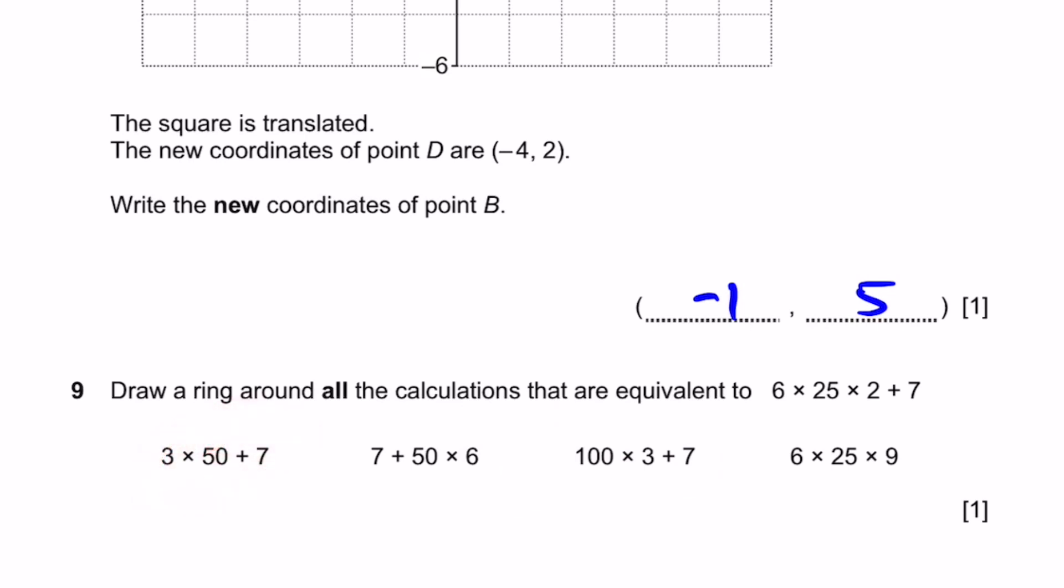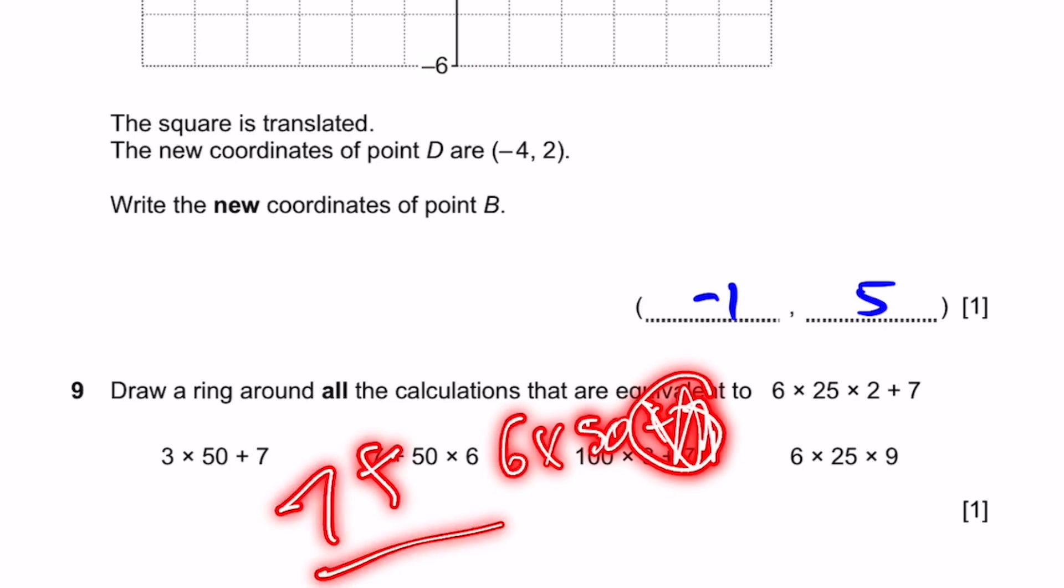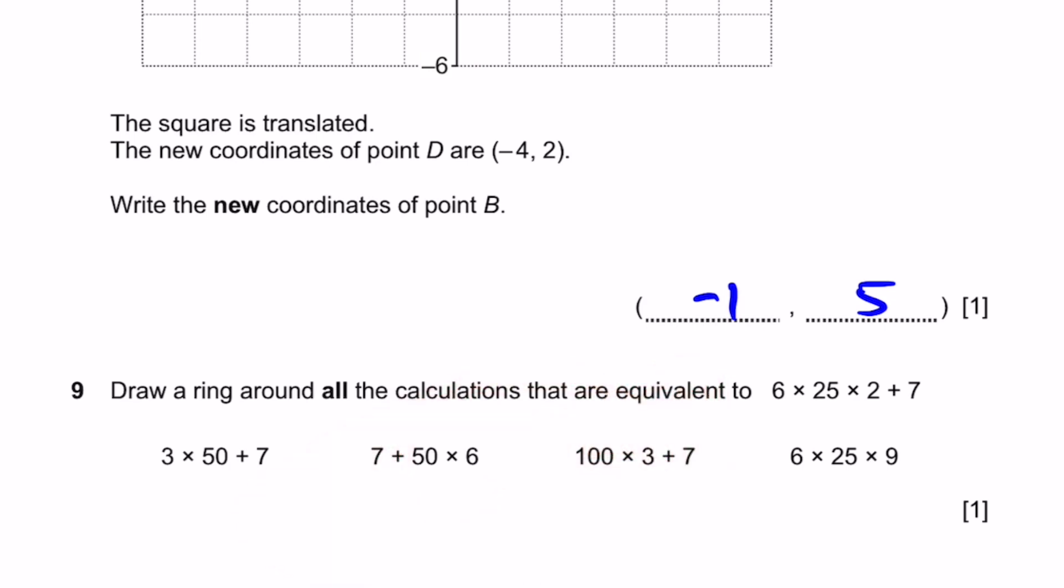Now, the first option, 3 times 50 plus 7. 25 times 2 is 50. So, this will be 6 times 50 plus 7. Over here, it's given 3 times 50 plus 7. So, this is not equivalent. Now, 7 plus 50 times 6, that's simply going to be equal to... Now, as I said, 25 times 2 is 50. Now, 6 times 50 plus 7. If we bring the 7 over here, it's still going to be the same result. So, this is equivalent.